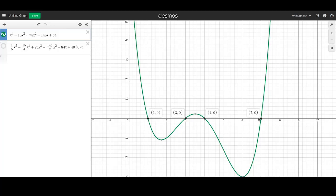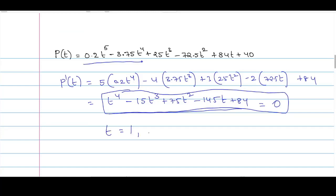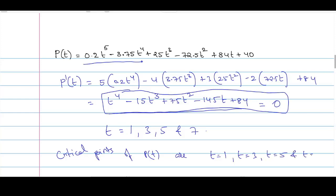Hence, t = 1, t = 3, t = 4, and t = 7 are the roots of the polynomial equation t⁴ − 15t³ + 75t² − 145t + 84 = 0. So we got roots as t = 1, 3, 5, and 7. Hence, the critical points of P(t) are t = 1, t = 3, t = 5, and t = 7.